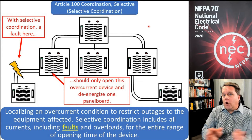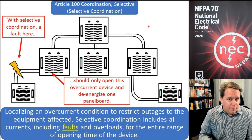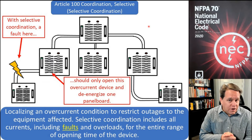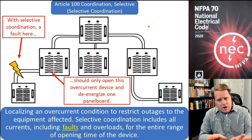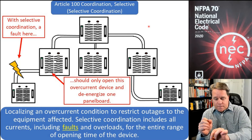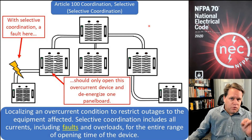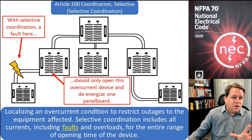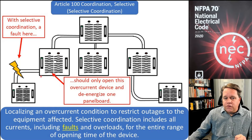The only question is which one opens soonest, because it could potentially open any or all three of them. When we selectively coordinate, we look at the characteristics of the circuit breakers or fuses and ensure that with the available fault current, it only opens the breaker or fuse closest to the fault. So if this system is selectively coordinated, the only breaker that would trip is the 50 amp breaker supplying that feeder circuit.